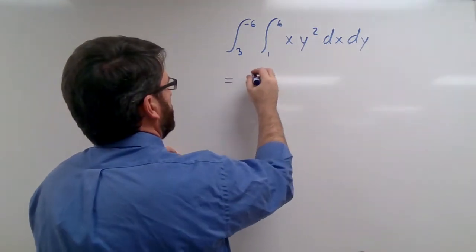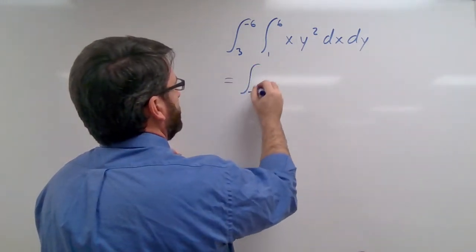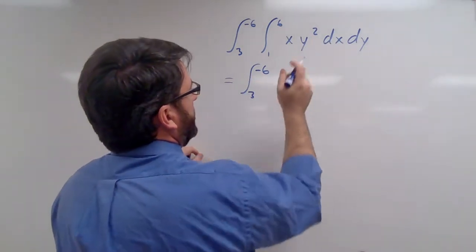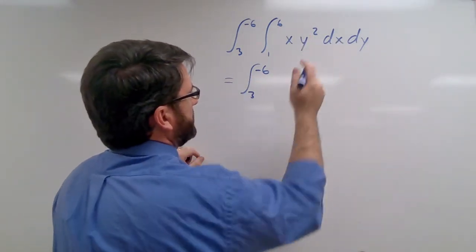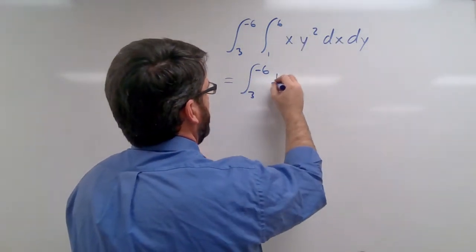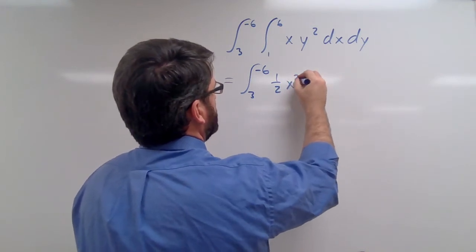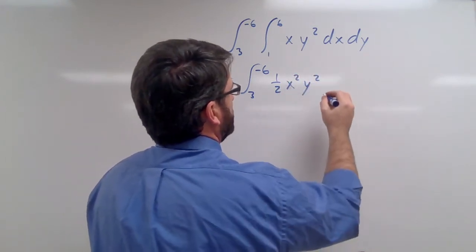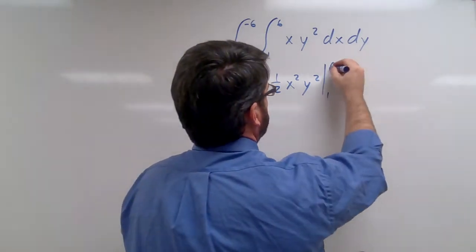So this is going to be equal to the integral from 3 to negative 6 of the integral of this with respect to x is going to be 1 half x squared y squared. And we're going to evaluate that from 1 to 6.